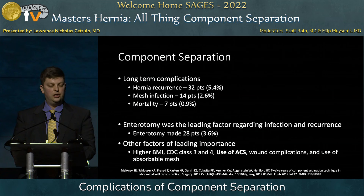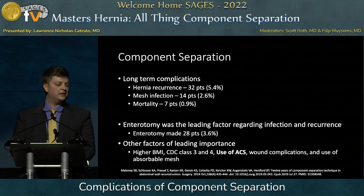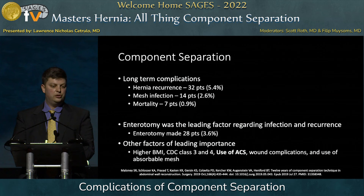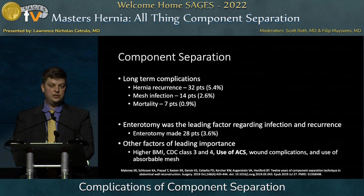Looking at more long-term complications — hernia recurrence, infection, and overall mortality — we see relatively low mortality and relatively low hernia recurrence with component separations, despite high acute complication rates. I want to specifically mention the importance of enterotomy: it is the leading factor for infection and recurrence. Even with low enterotomy rates, this can drive up your recurrence rates. So take your time — if you're doing a posterior component separation, make sure you're lysing every adhesion. If doing an ETEP, I recommend doing an intra-abdominal peek, because if you're sewing a lot of holes in your posterior layer closed and can't see what's on the other side, you're at real risk for enterotomies and bowel injury.